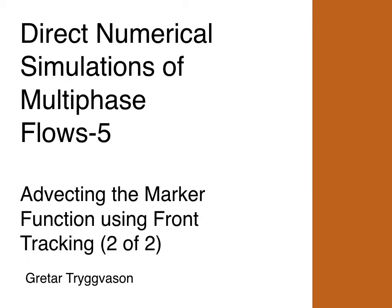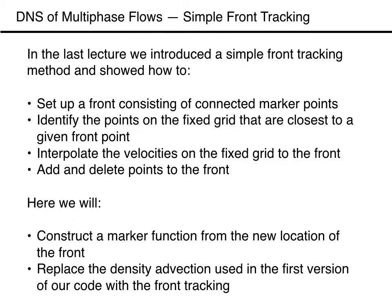In this segment we continue to develop a front tracking method based on advecting connected marker points. In the last lecture we started to develop a simple front tracking method using ordered marker points. We showed how to set up the front for a closed interface representing a bubble or a drop. We found a way to identify which points on the fixed grid are closest to the given front point, and developed a strategy to interpolate the velocities on the fixed grid to the front and move the interface points once we have their velocities.